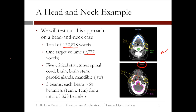There are five critical structures that we want to minimize the dose to: the spinal cord, the brain, the brain stem, the parotid glands, and the mandible, or jaw. We're using five beams, and each beam is composed of about 60 beamlets. In total, there are 328 beamlets.